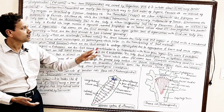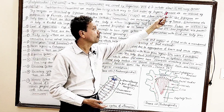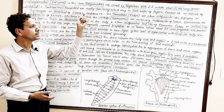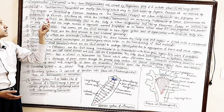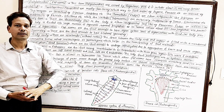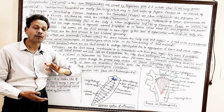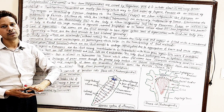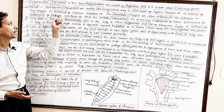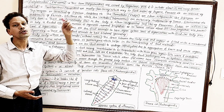Some planarians are freshwater forms, like Dugesia and Planaria. Some are marine forms, like Thysanozoon. And some are terrestrial, like Bipalium and Geoplana. So planarians are found in all conditions — freshwater, marine, and terrestrial.